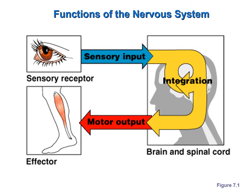This figure from your book basically summarizes the functions of the nervous system. Every component of the nervous system is involved in one or more of these activities: sensory reception, integration, or sending motor output out to an effector.